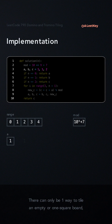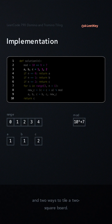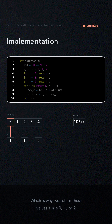There can only be one way to tile an empty or one-square board, and two ways to tile a two-square board. Which is why we return these values if n is 0, 1, or 2.